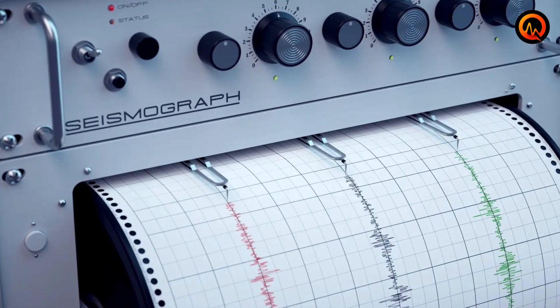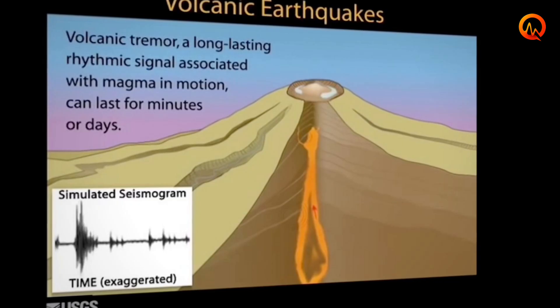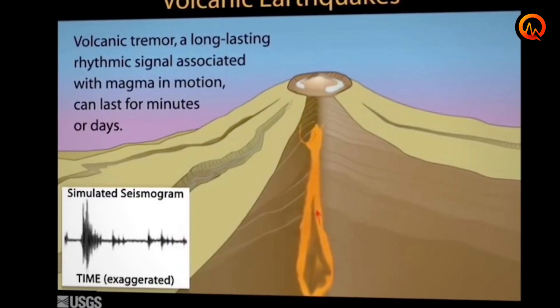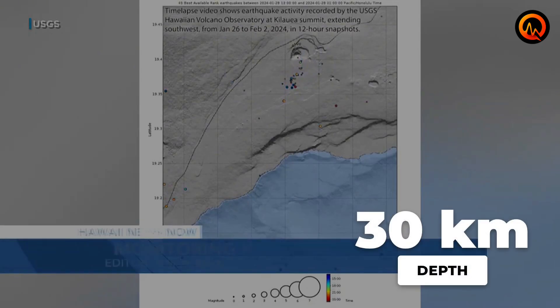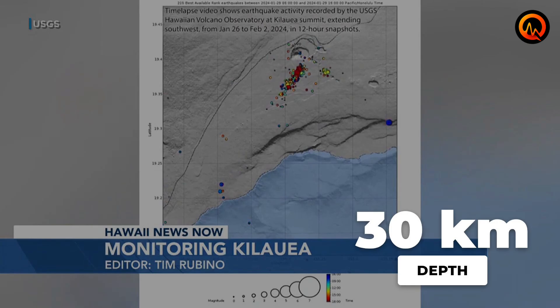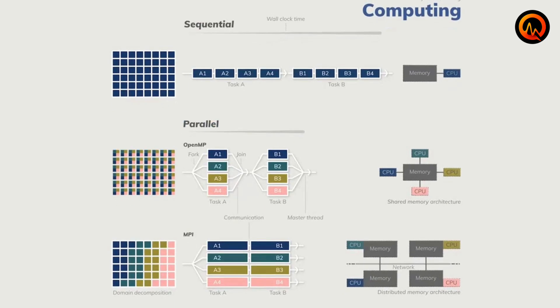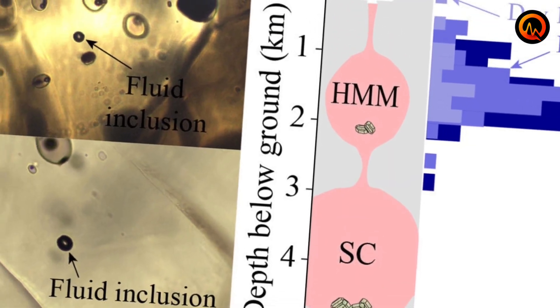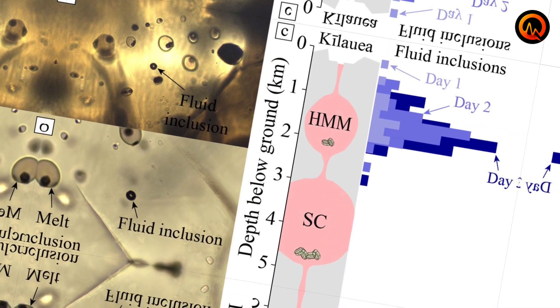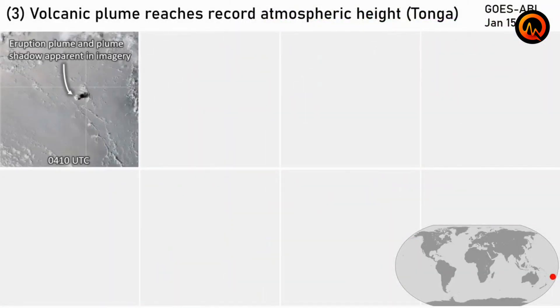What makes this surge particularly significant is the depth of the seismic activity. Most of these volcanoes are showing earthquake activity originating from depths of 20 to 30 kilometers below the surface, much deeper than typical pre-eruption seismic patterns. This suggests involvement of deep crustal processes, rather than shallow magma chamber dynamics. The evidence points to a global geological event that transcends individual volcanic systems.